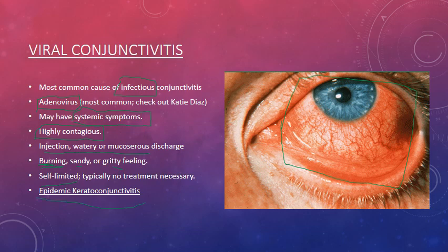There is one exception where we need to be more alarmed: epidemic keratoconjunctivitis. This is a particularly fulminant form of keratitis — inflammation of the cornea — which happens in addition to conjunctivitis. It's most often caused by adenovirus serotypes 8, 19, and 37. Keratitis is potentially vision-threatening, and these patients should be referred to an ophthalmologist very quickly to confirm the diagnosis and decide whether glucocorticoids are needed to control the infection.